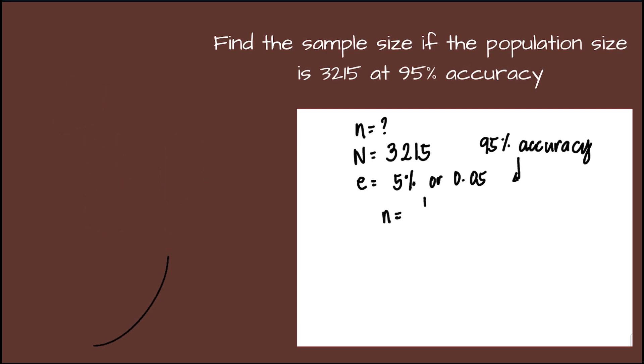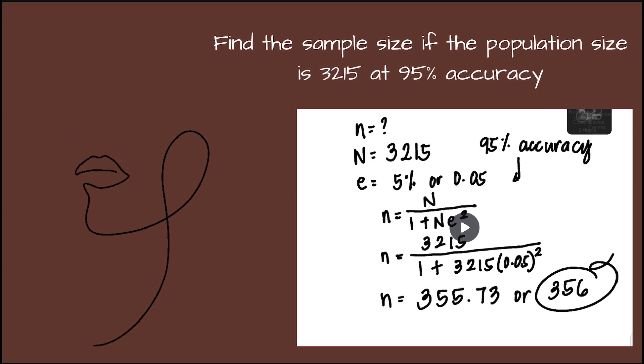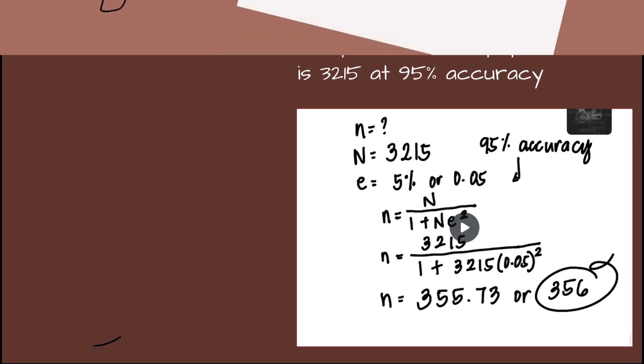Using the formula, substitute. We have 3,215 all over 1 plus 3,215 multiplied by 0.05 squared. Simplify it, so we will have 355.73 or 356. The number of samples we needed is 356.